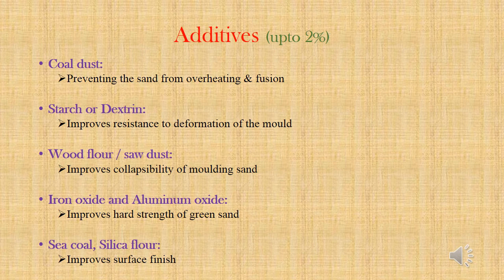Other additives include starch, which improves resistance to deformation of the mold; wood flour, which improves collapsibility of the molding sand; iron oxide and aluminum oxide, which improve strength of the green sand; and finally sea coal, which improves surface finish of the casting.